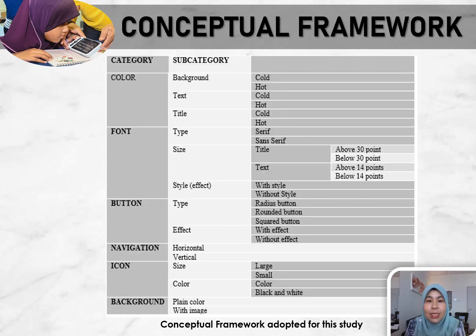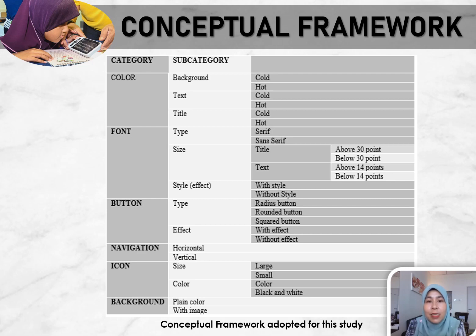The slide shows the conceptual framework. Taking into consideration those guidelines and to fulfill the study need, the survey questions are divided into two sections: Section A and Section B. In Section A, four questions relate to student demographics and experience in using an online classroom. In Section B, 12 questions identify the appropriate interface elements that suit students' needs and preferences. Questions in Section B are divided into six main categories, each comprising subcategories.